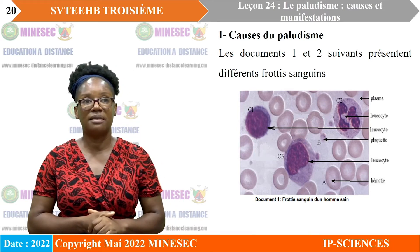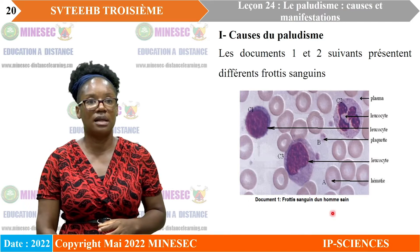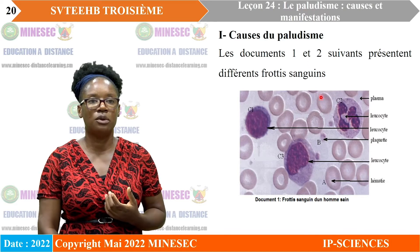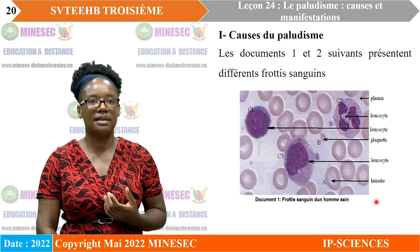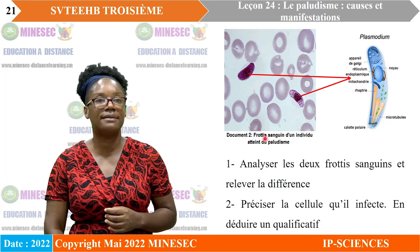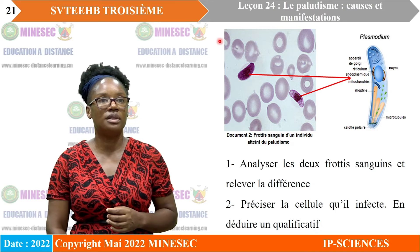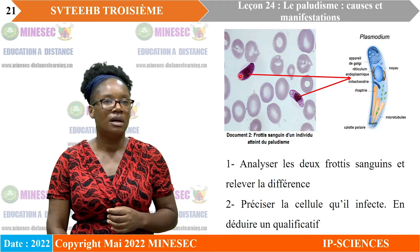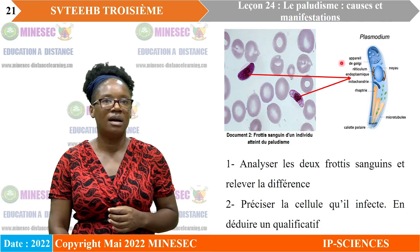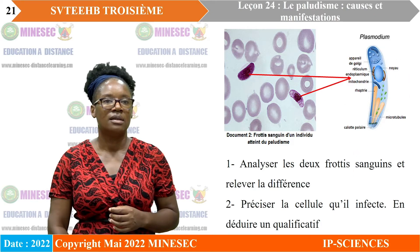Nous commençons la première partie : les causes du paludisme. Nous avons deux documents présentant des frottis sanguins. Le premier est le frottis sanguin d'une personne saine, avec différentes cellules baignant dans le plasma : leucocytes, plaquettes et hématies, qui sont les cellules sans noyau. Le deuxième document présente un frottis sanguin d'une personne atteinte du paludisme : on y voit de nombreuses hématies, et un élément nouveau à l'intérieur d'une hématie. Ici, l'hématie a éclaté.